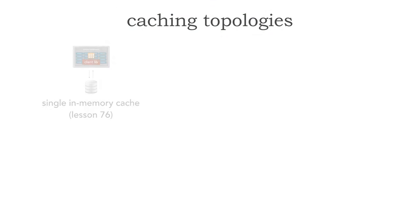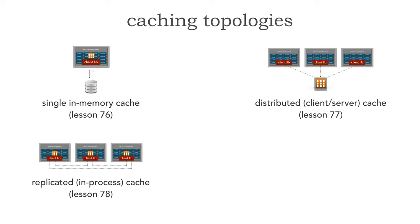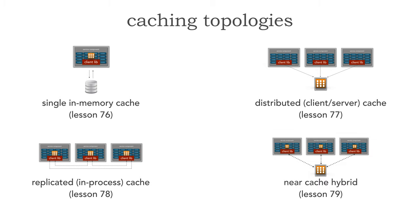So far, we took a look at a single in-memory cache in lesson 76. Then in lesson 77, we looked at the differences between a single in-memory cache and a distributed cache, otherwise known as a client-server. In the last lesson, number 78, we took a look at replicated or in-process caching. And now in this lesson 79, we'll take a look at a near-cache hybrid.